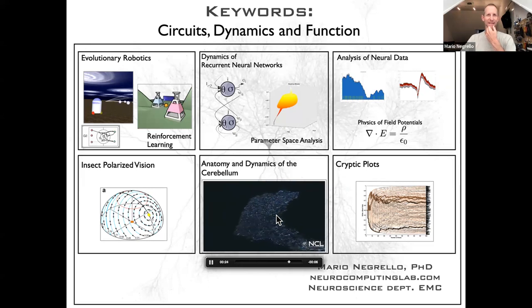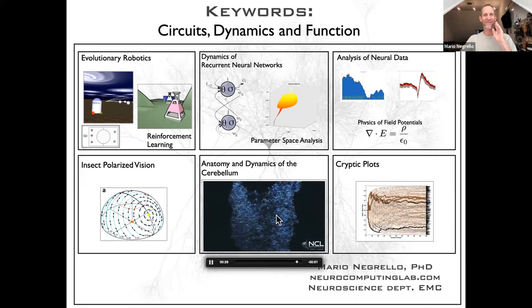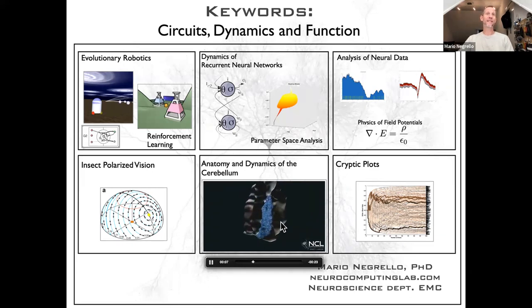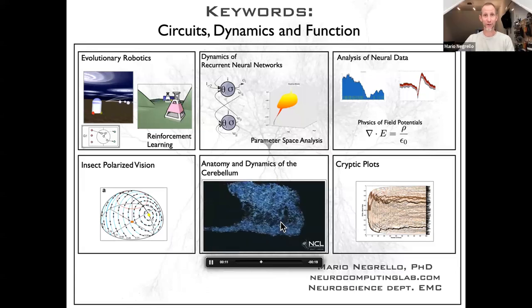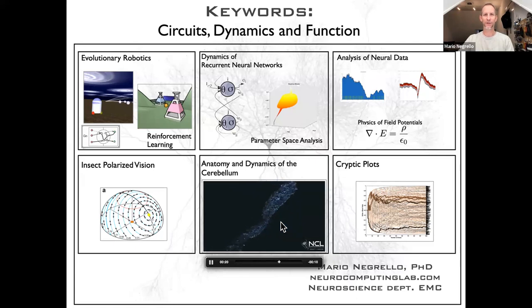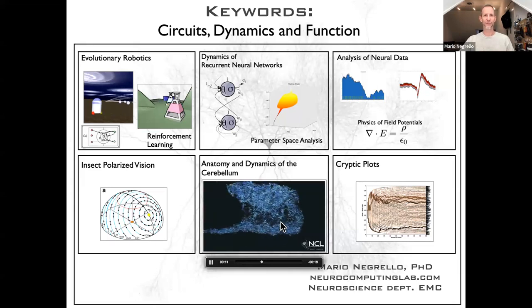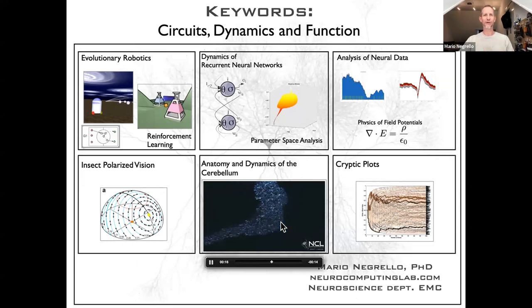I've applied the notions that you learn in this course to study the dynamical systems that the recurrent neural networks in these robots embedded. One core concept is the idea of parameter space analysis to try to understand the qualitative changes that happen in the behavior of a system as you smoothly change parameters. These concepts are now used in high level models of the cerebellar system that we are developing.